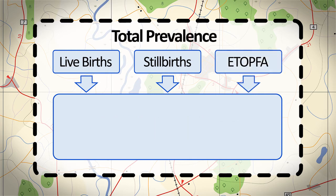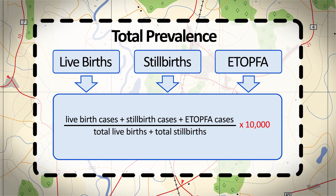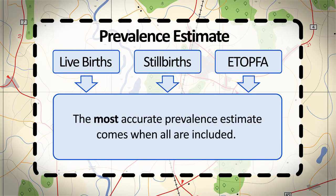Programs that are able to collect data on live births, stillbirths, and elective terminations of pregnancy for fetal anomaly should use the measure of total prevalence. To determine total prevalence, add together the cases of birth defects found among live births, stillbirths, and elective terminations of pregnancy for fetal anomaly, then divide by the total of live births and stillbirths and multiply the result by 10,000. The most accurate prevalence estimate comes when data for all three outcomes are included.